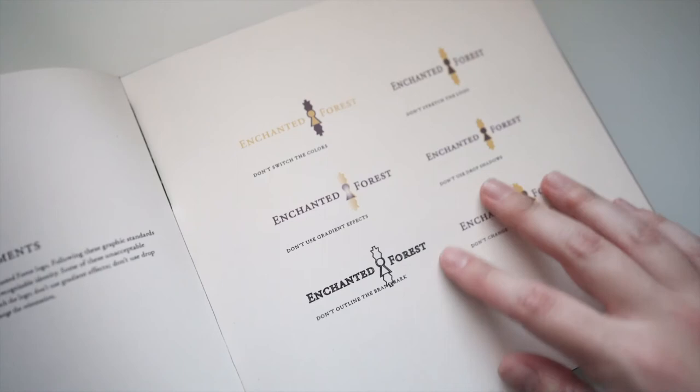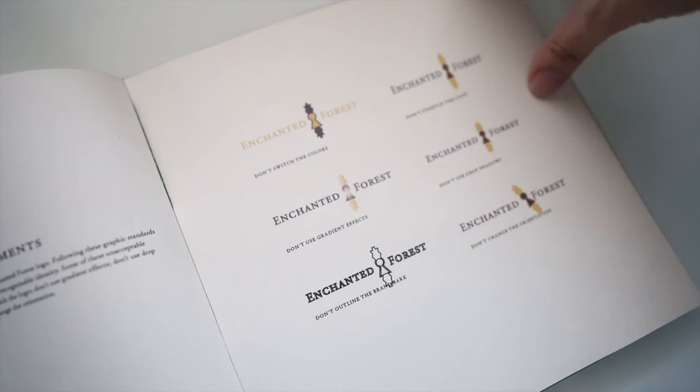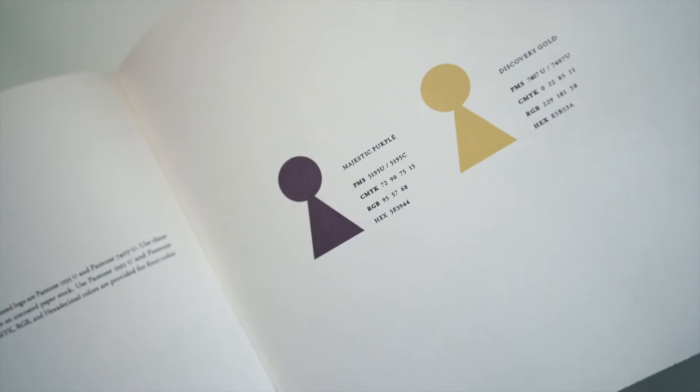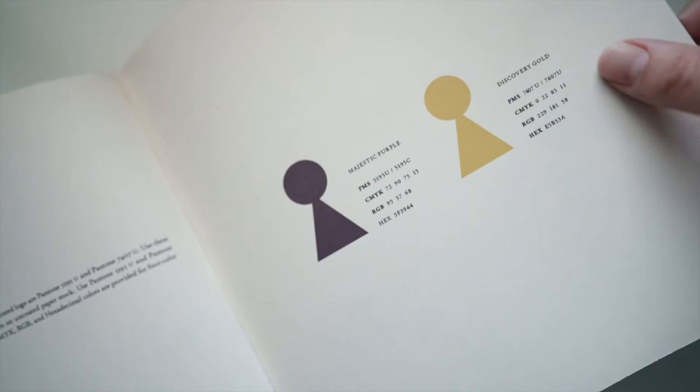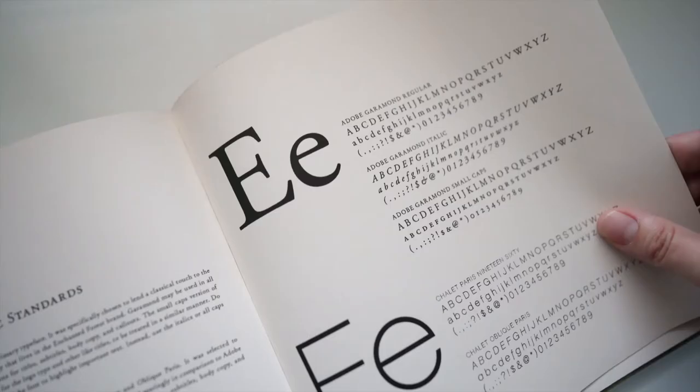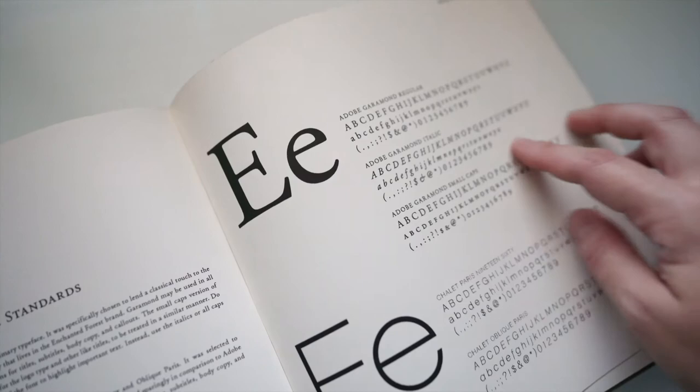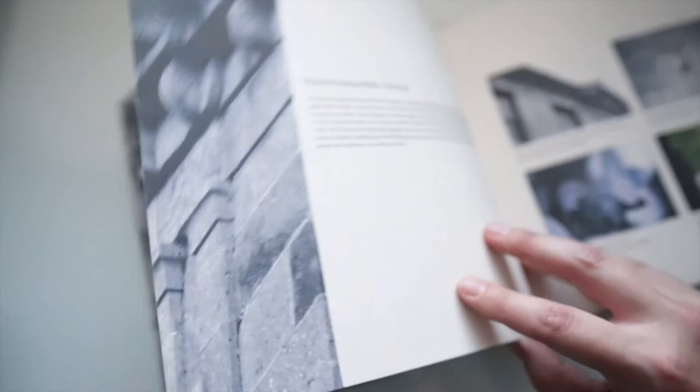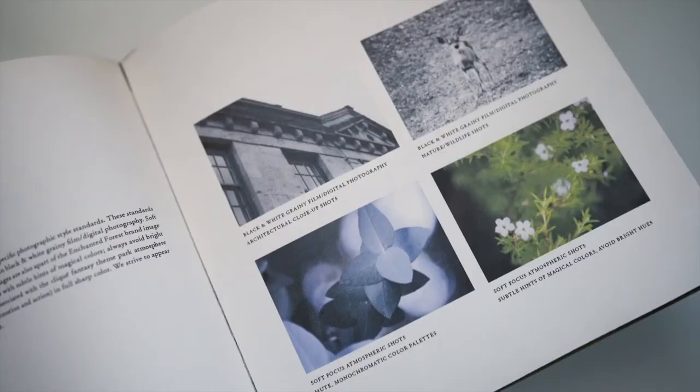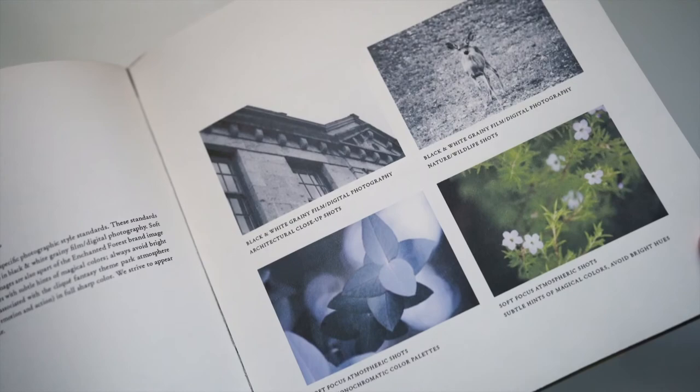Another divider page. And these are the final colors. I named them Majestic Purple and Discovery Gold. And these are the PMS, CMYK, RGB, and hex colors. Getting into the typography. So the main Enchanted Forest typeface is in Adobe Garamon. And then a supporting typeface that I chose was Chalet. The photographic style. So I ended up deciding on using a black and white grainy film photography and pairing that with soft focus atmospheric shots.